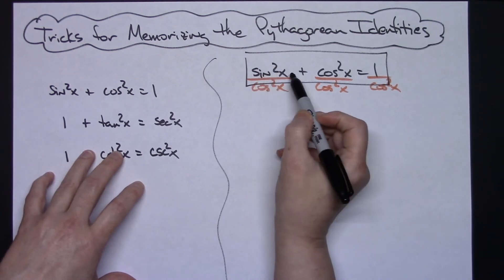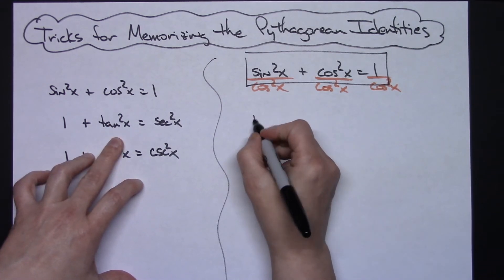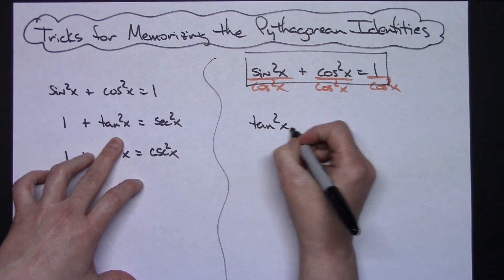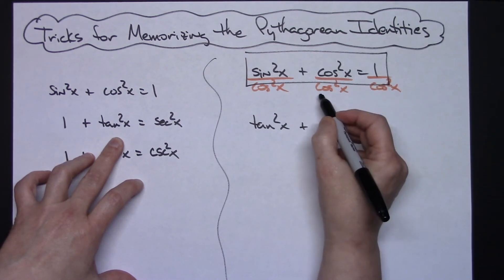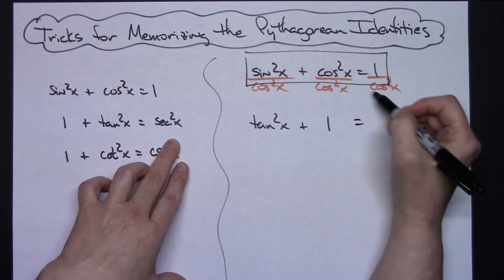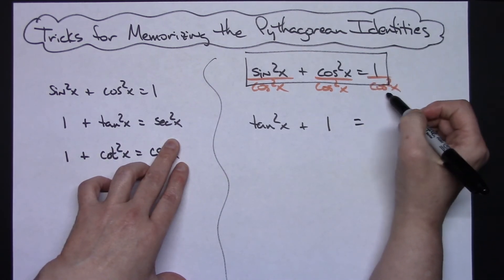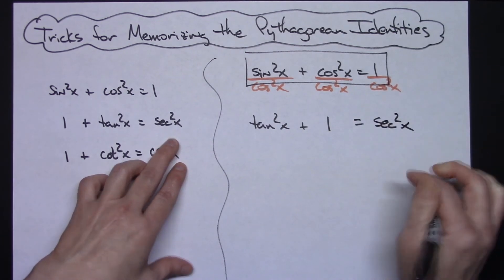All right, in this first one I've got sine squared x over cosine squared x. Well, that is tangent squared x. All right, anything over itself is always 1. So cosine squared x over cosine squared x is going to give me a 1. And then knowing the reciprocal identities, 1 over cosine squared x—that's a reciprocal identity of secant squared x.